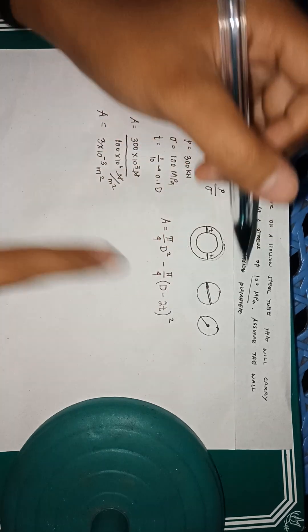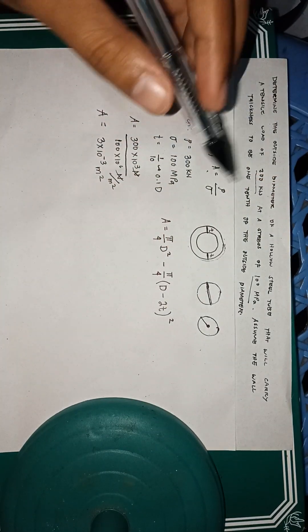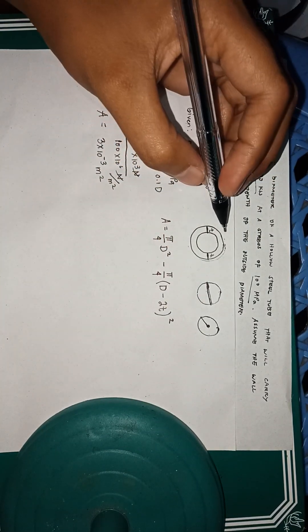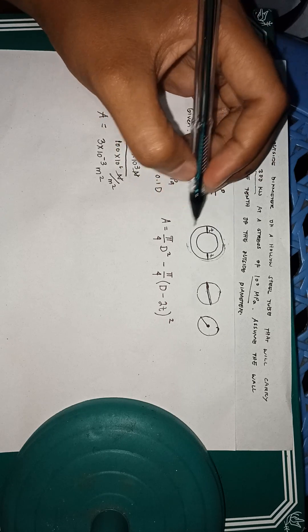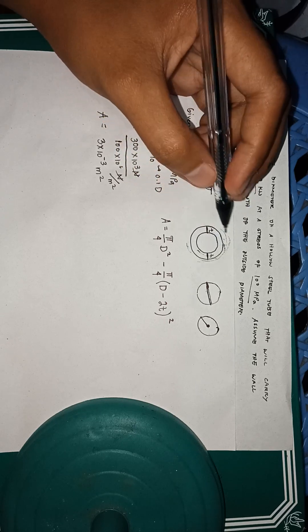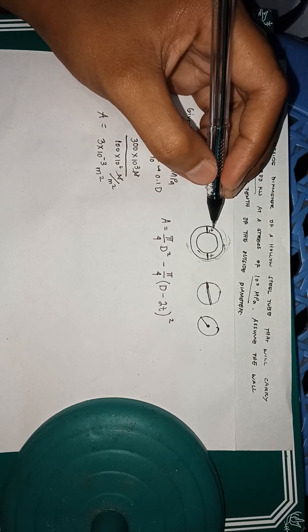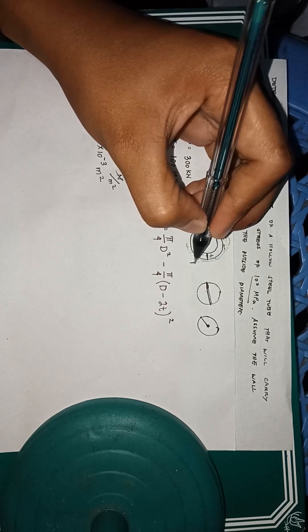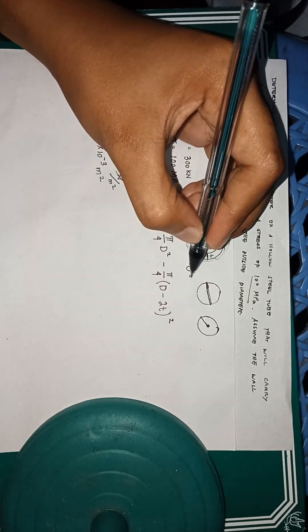Because the formula of the outside diameter, d outside is equals to d inside minus 2t. That's it.